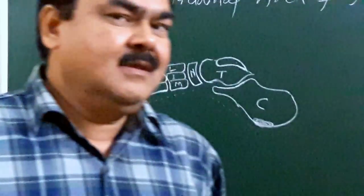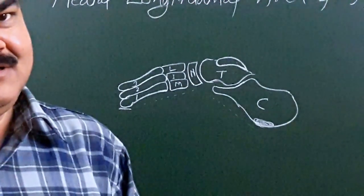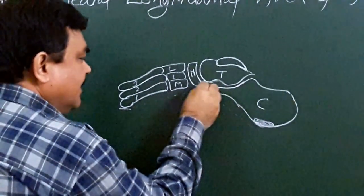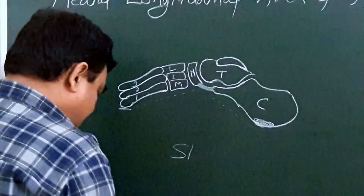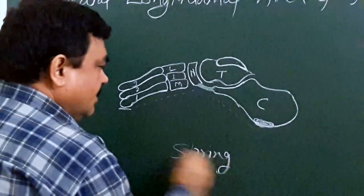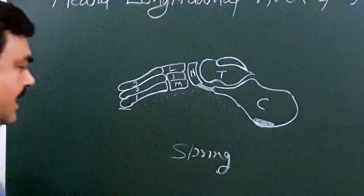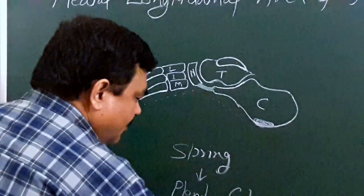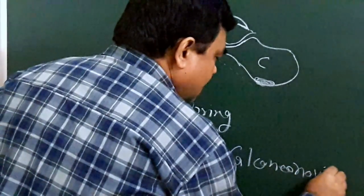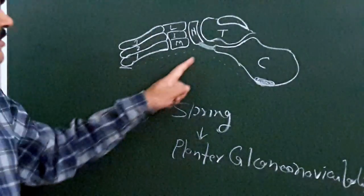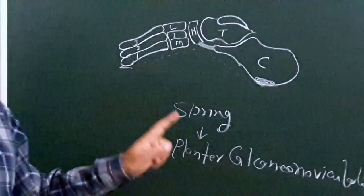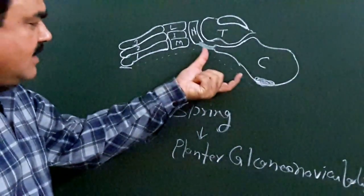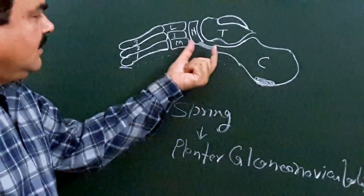Now we will discuss about the factors responsible for maintaining the arch. Here a ligament is present — this ligament is the spring ligament, also known as the plantar calcaneonavicular ligament. It forms an important intersegmental tie.